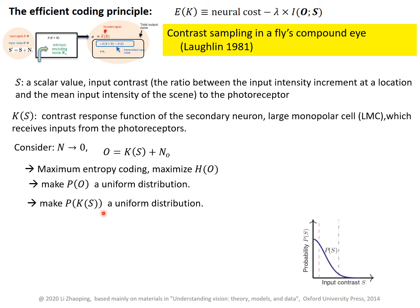For example, if we have this probability distribution of input contrast — in this example, low input contrast is more probable than high input contrast — and we use this contrast response function, you can see that it grows quickly with low contrast and then saturates for high contrast.